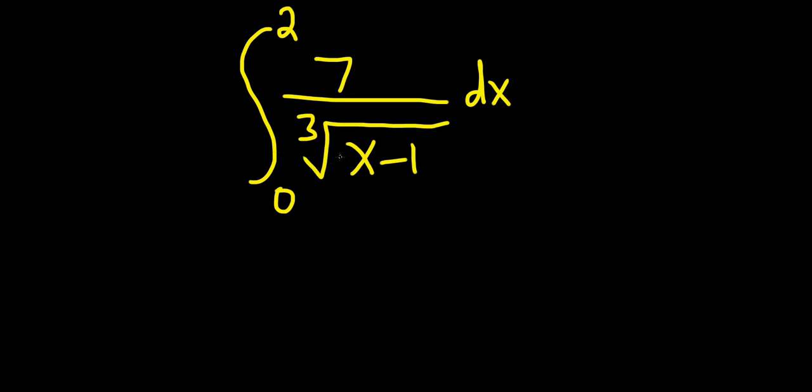So this is an improper integral because it's not continuous at 1. It has what's called an infinite discontinuity at 1. If you plug in 1 here on the bottom of the integrand, you'll just get 7 over the cube root of 1 minus 1, which is 7 over the cube root of 0, which is just 7 over 0, which is undefined.